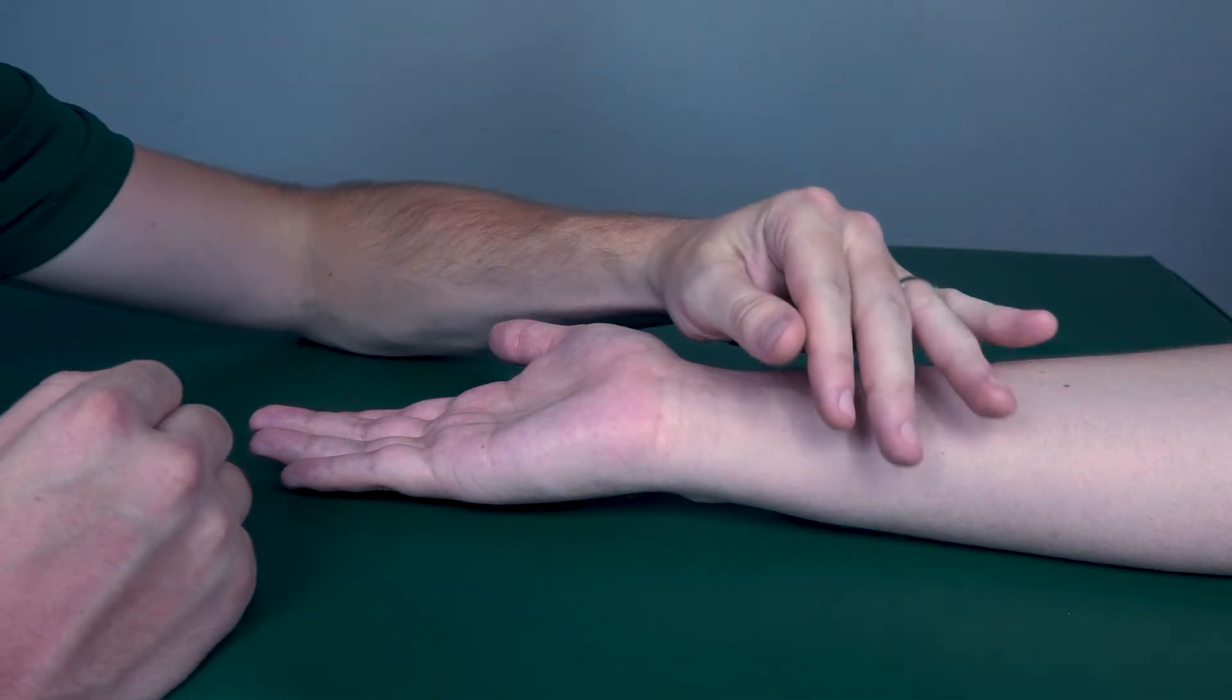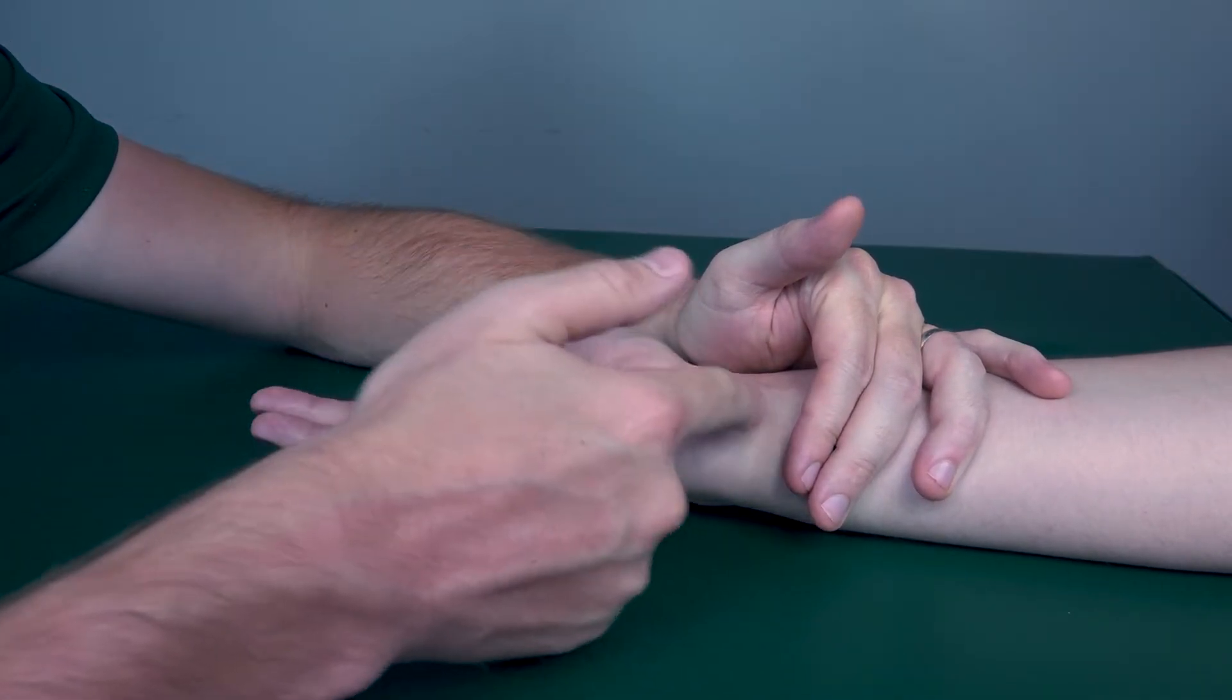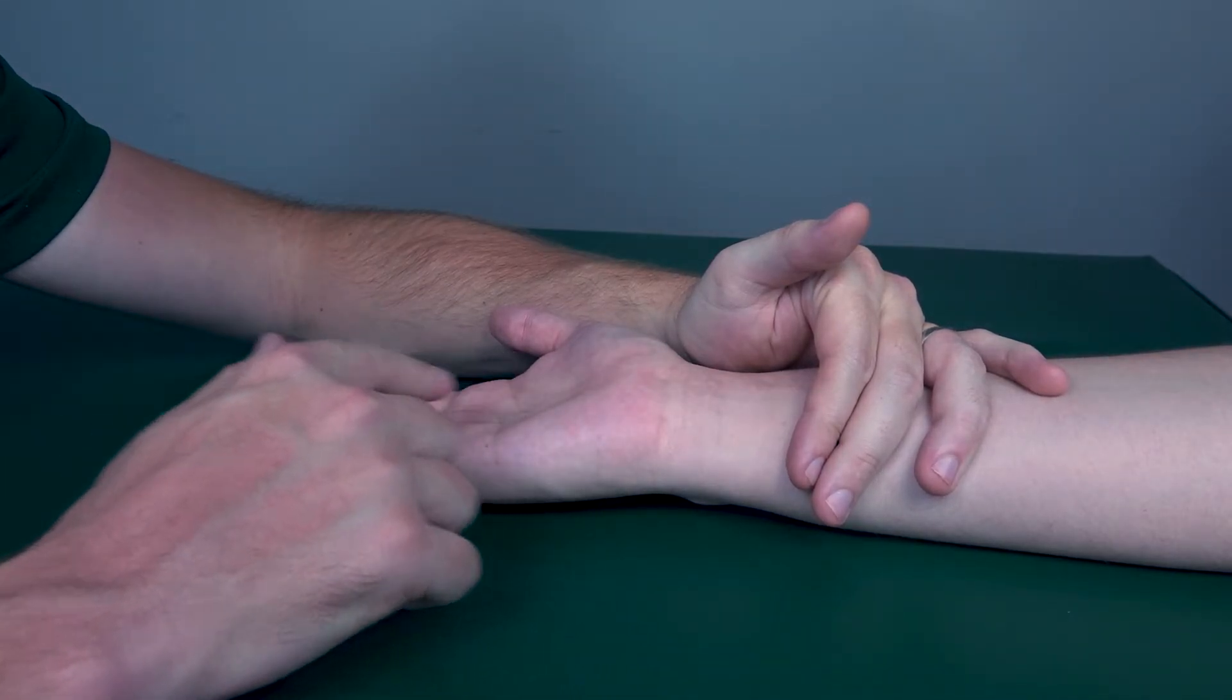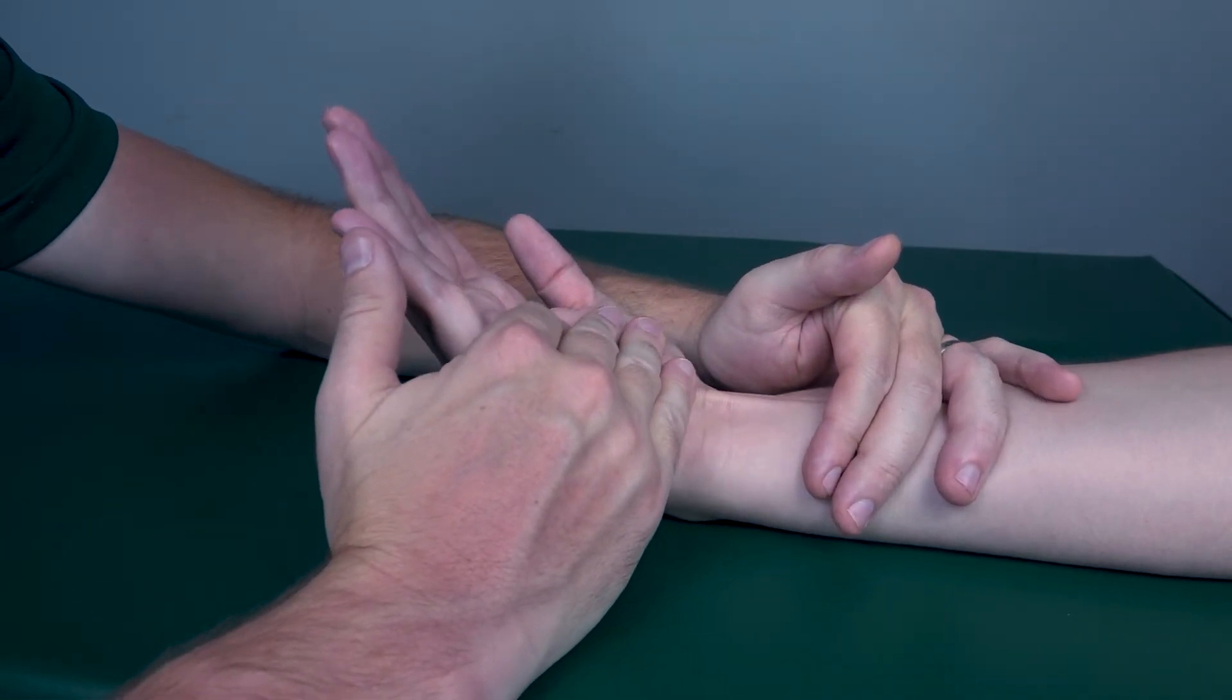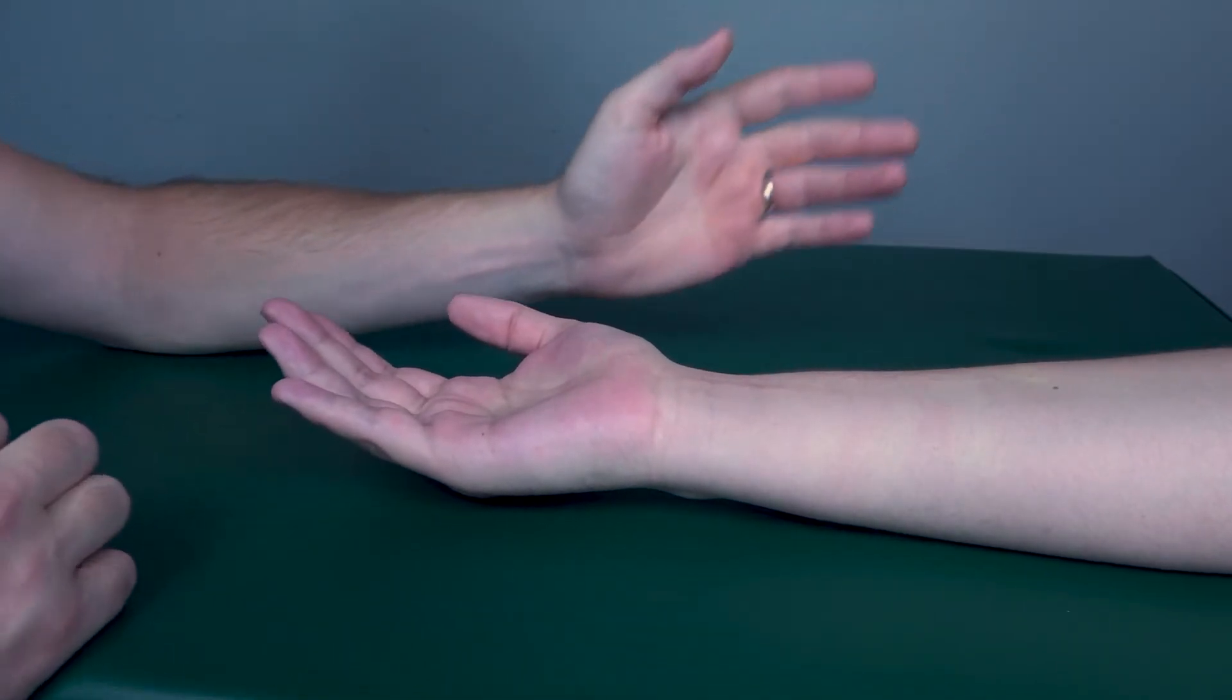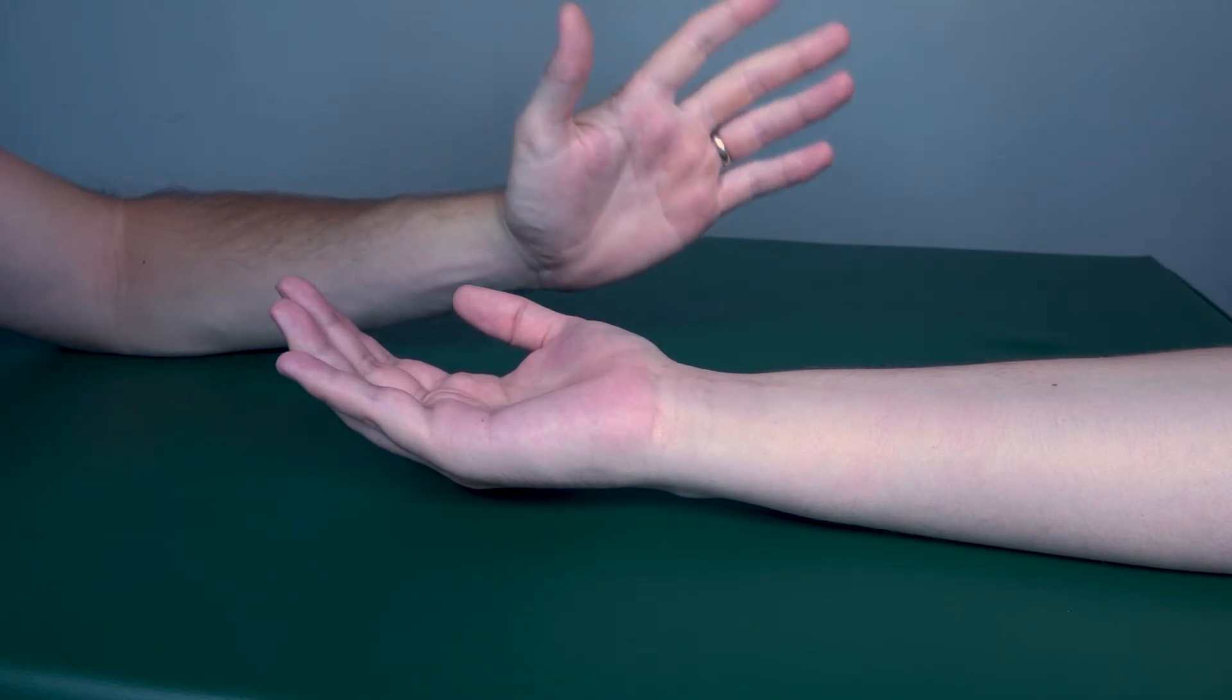To test for a four or five, I will stabilize the forearm just proximal to the wrist, and then I will add resistance to the palm. But first, Owen, bring your wrist into halfway flexion. Okay, and then resist me three, two, one, zero. Depending on the resistance that he gives me, I will rate him as a four or five.